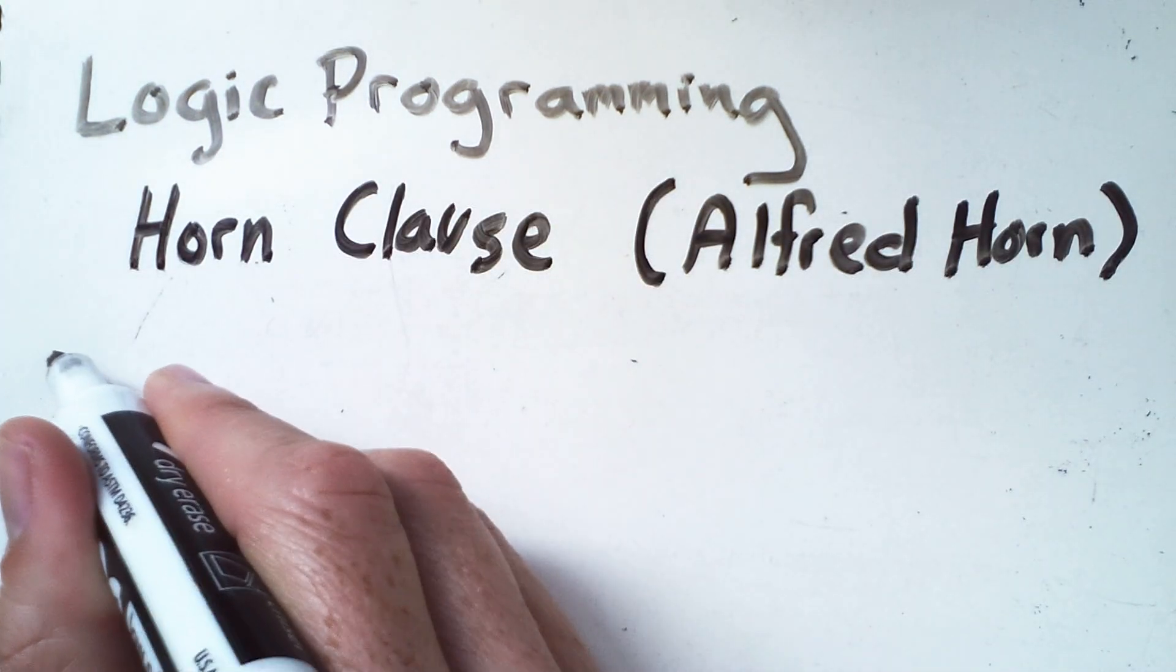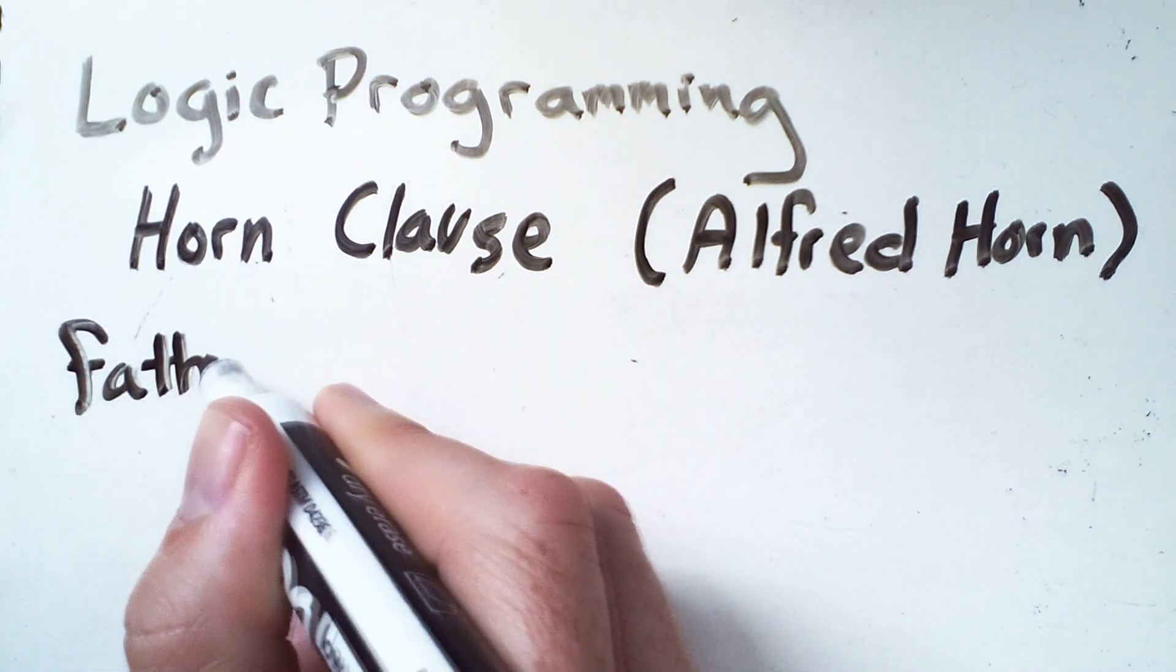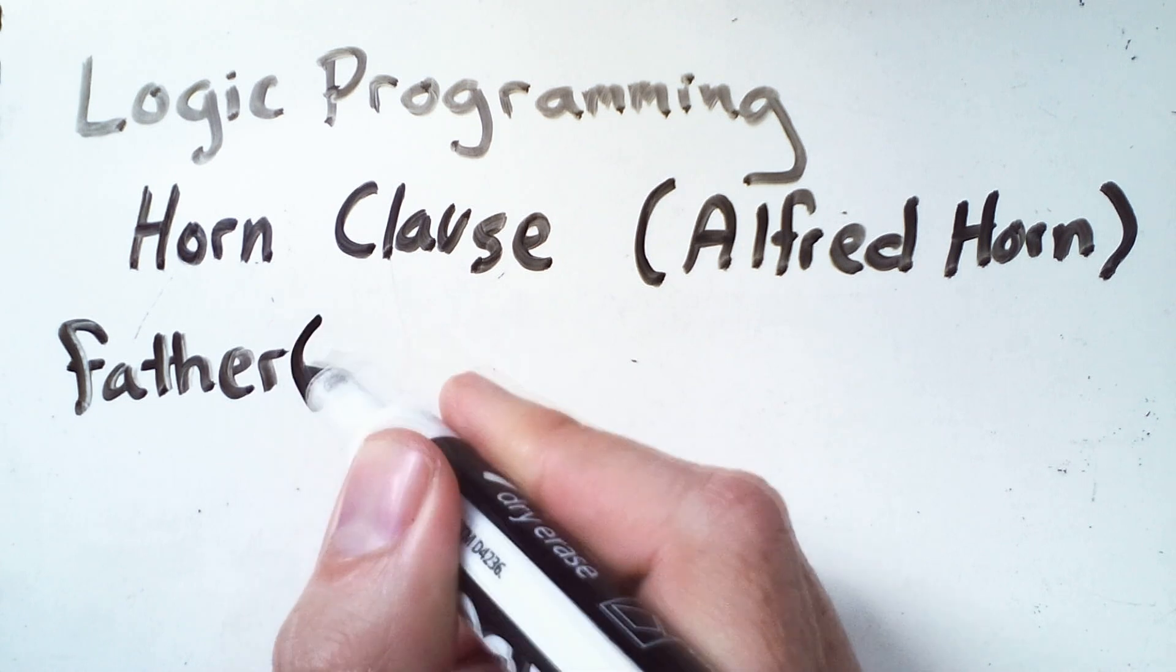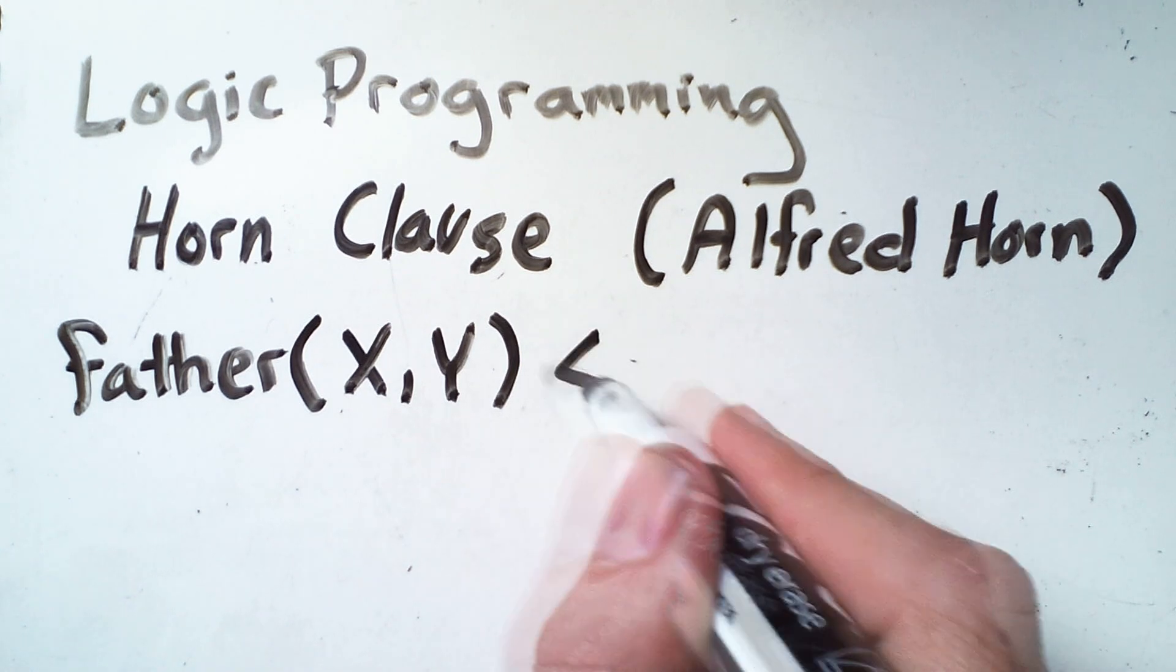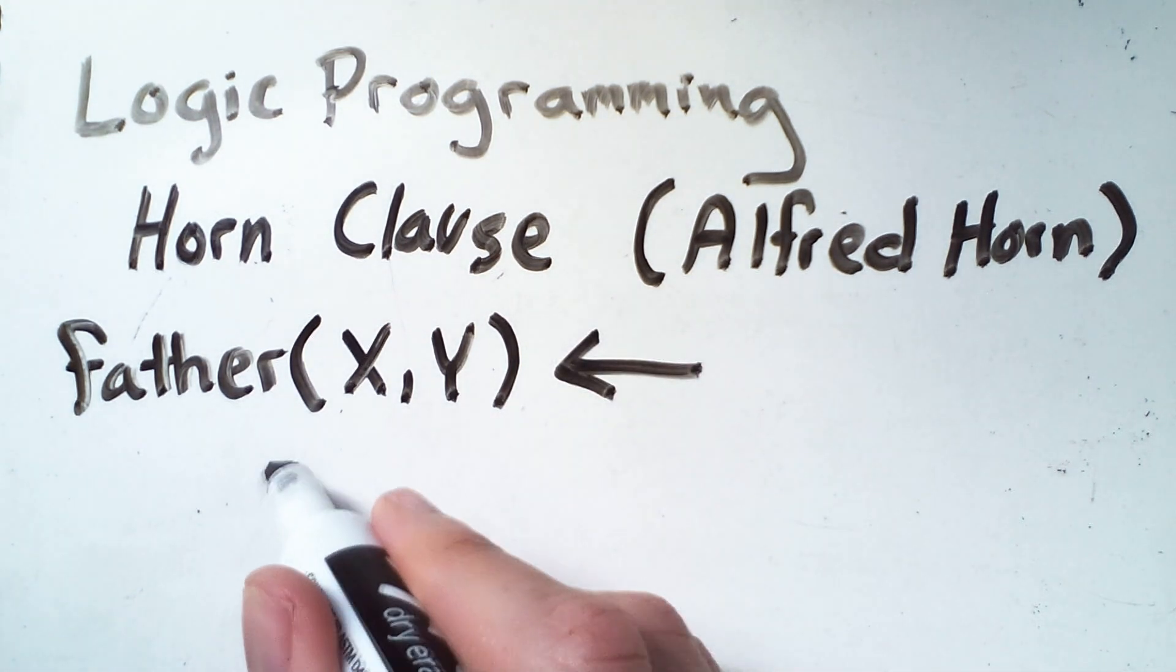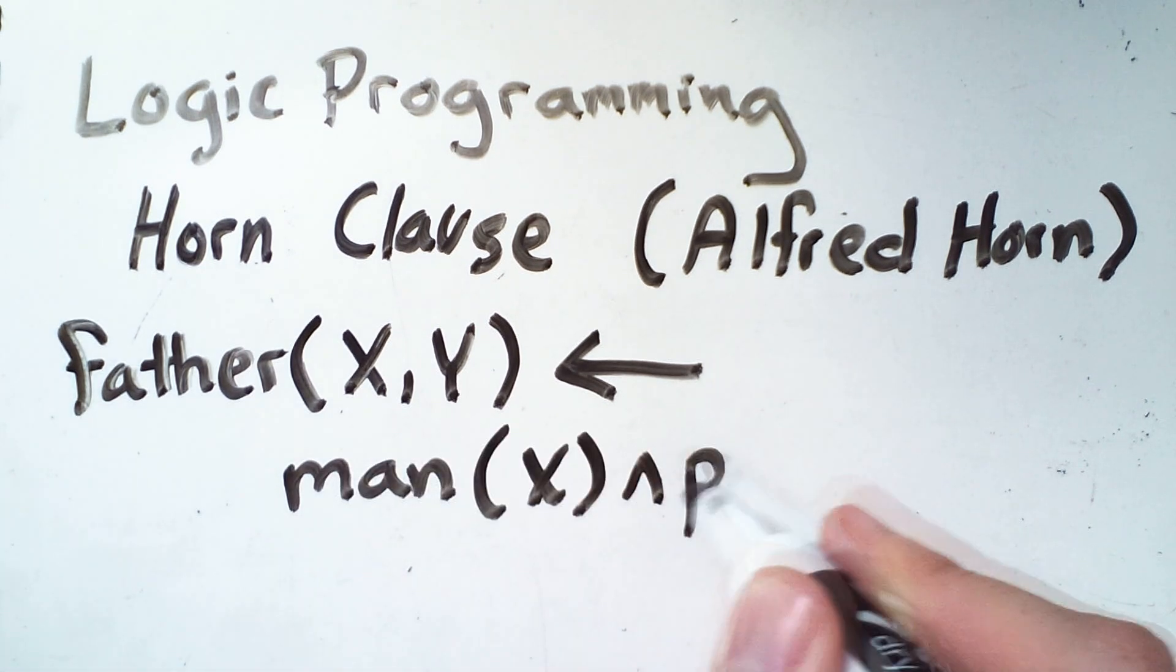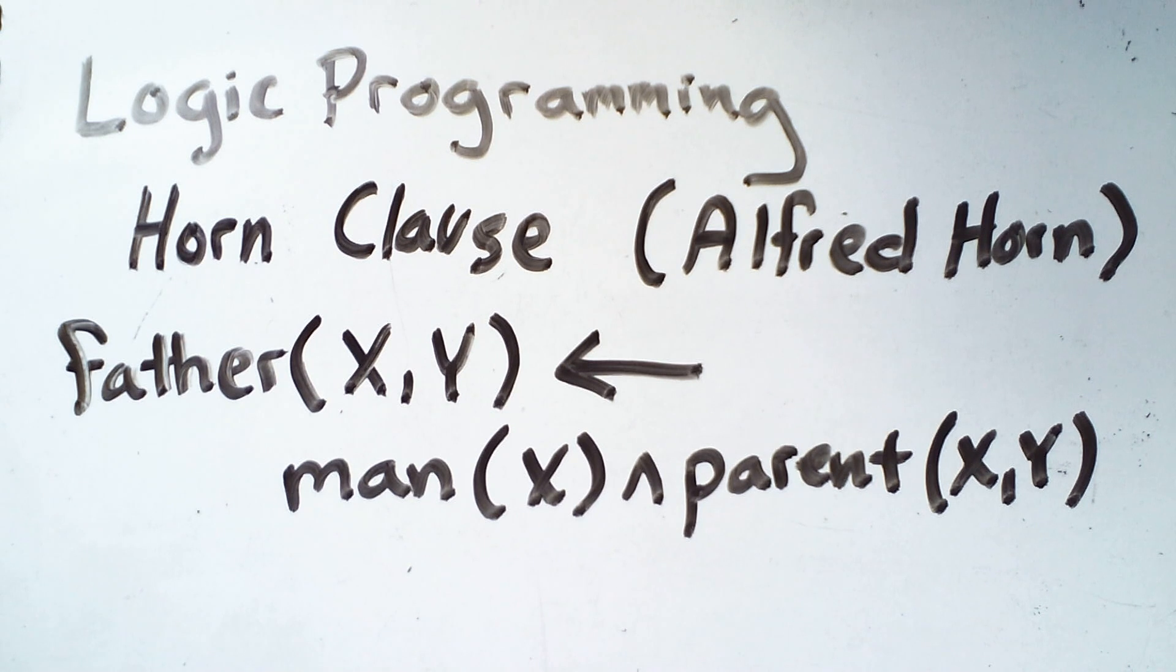Now, in a horn clause, we put the fact that we're implying on the left of the implication. So we say that father(x,y) is implied by man(x) and parent(x,y). Now, for the specific example I'm working with, it looks like all I did was reverse the order of the implication and remove the universal quantifier. So with horn clauses, we don't have a universal quantifier. It's always implied. So we are still making a claim that this is true for all values of x and y.